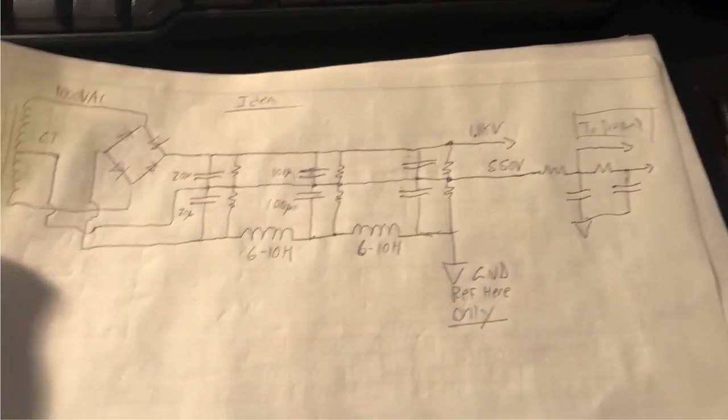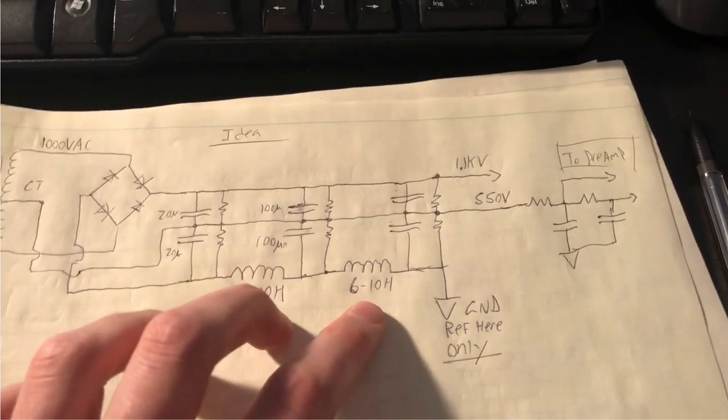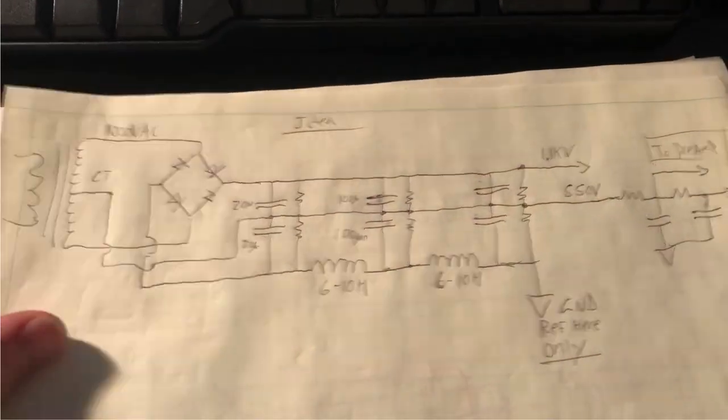So this V mid rail seems pretty clever, and again, economical, where we can share a filter choke and filter 550 volts or our mid rail and our top rail simultaneously.